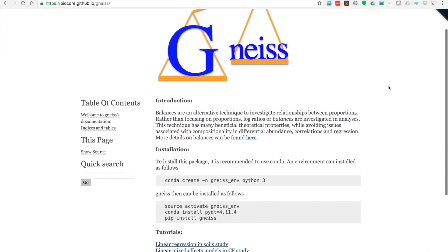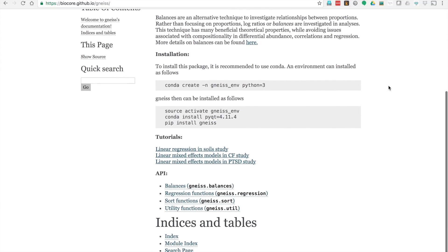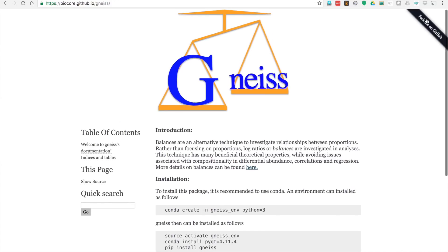All of these analytical techniques can be found in our software package, Gneiss. Gneiss is pip installable, has full documentation and tutorials along with it. It can also be found on GitHub.